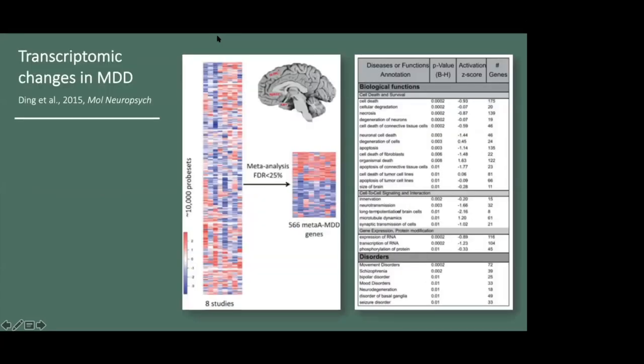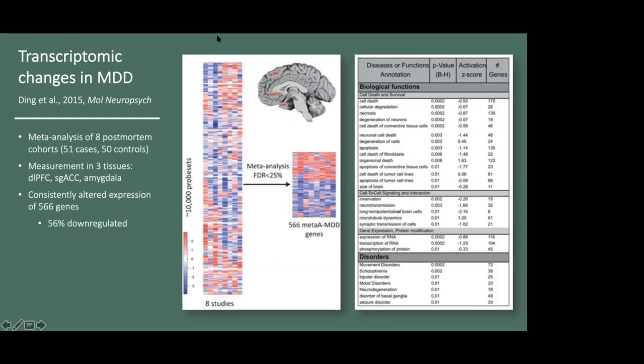As part of this study, the authors meta-analyzed transcriptomic data from eight postmortem cohorts, including 51 depression cases and 50 matched controls. They compared tissue-specific expression in three regions: the DLPFC, the subgenual ACC, and the amygdala, and they observed consistently altered expression of 566 genes, 56% of which were downregulated in the depression cases.